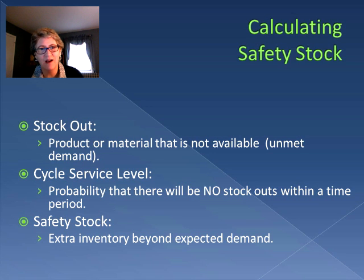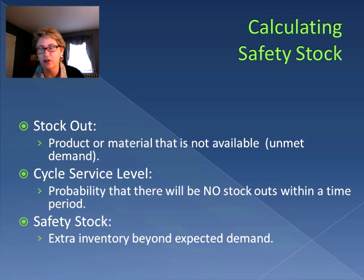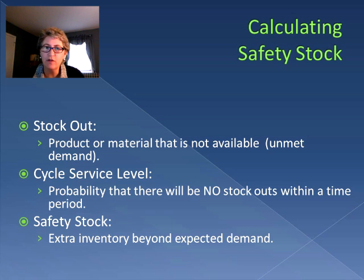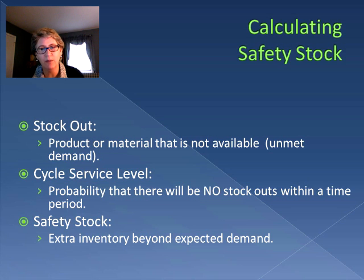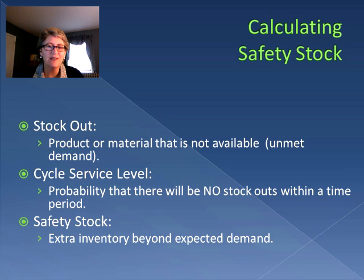First is stockout — stockout means that we are not able to meet demand; the item is simply not on the shelves or in the warehouse. Another term is the cycle service level, sometimes just called the service level, which is the probability that we will not run out of items — so the probability that there will not be a stockout. And safety stock is just extra inventory that we hold onto beyond what we expect to use.